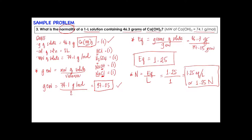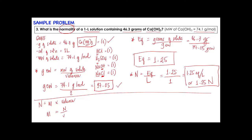We can also solve for normality if molarity is given using the shortcut formula: normality = molarity × valence. Transposing: molarity = normality ÷ valence = 1.25 ÷ 2 = 0.625 molar.